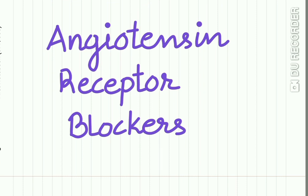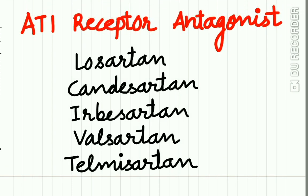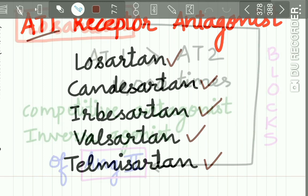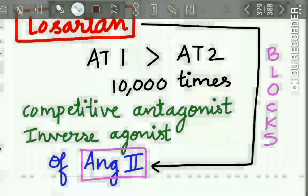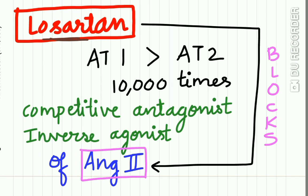The next group is angiotensin receptor blockers. AT1 receptor antagonists are losartan, candesartan, irbesartan, valsartan, and telmisartan. Losartan is considered the prototype of this category.